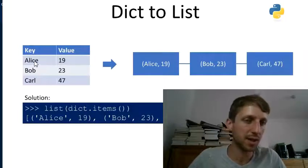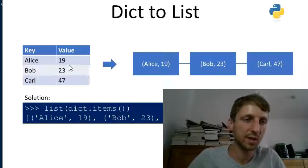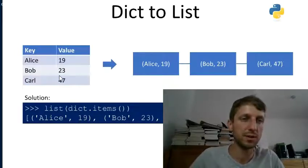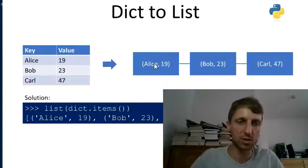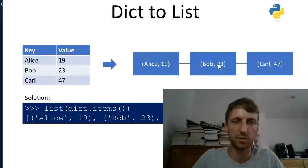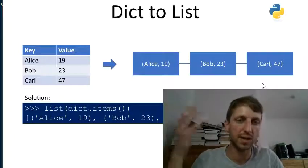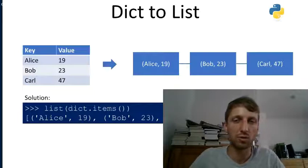Given a dictionary with some keys like Alice, Bob, and Carl, and some integer values for ages — 19, 23, 47 — you want to obtain a list of tuples like this: Alice 19, Bob 23, Carl 47, where the first tuple value is the key and the second is the value.